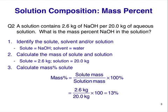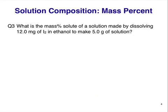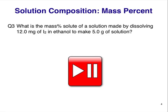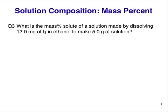Not bad, as long as we keep the terms solvent and solution straight. Let's try something more challenging. Question 3. What is the mass percent solute of a solution made by dissolving 12.0 milligrams of iodine in ethanol to make 5 grams of solution? Stop the video here and figure out the answer.